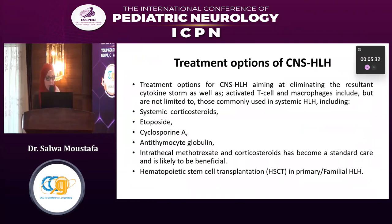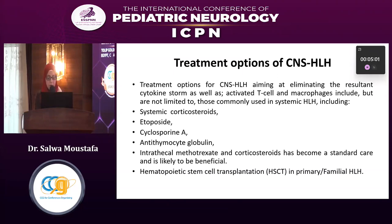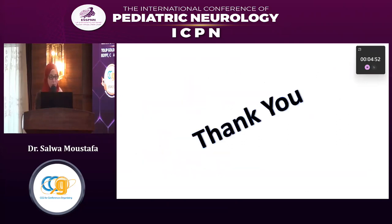Treatment options for CNS-HLH aim primarily to eliminate the cytokine storm resulting from the vicious circle of persistently activating T-cells and macrophages. These include systemic steroids, chemotherapy such as etoposide, cyclosporin, and antithymocyte globulin. When the patient has CNS symptoms, CNS-directed therapy in the form of intrathecal chemotherapy — methotrexate — as well as steroids is required. For patients with primary or familial HLH, early stem cell transplantation is greatly beneficial to halt the disease process.